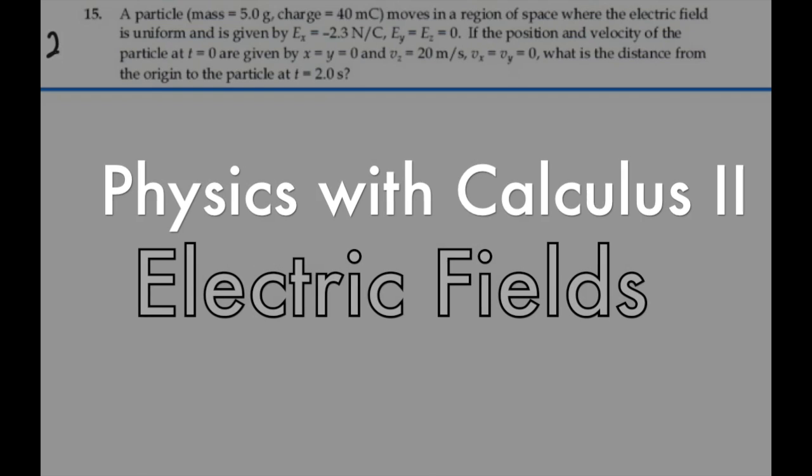Here's problem 23.15. A particle with mass 5 grams and charge 40 mC moves in a region of space where the electric field is uniform and given by E_x = -2.3 N/C. E_y = E_z = 0.